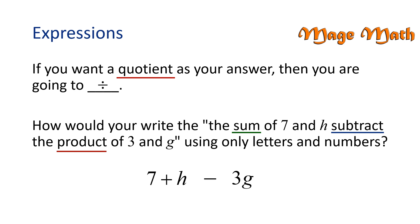So we started with the quantity of 7 plus h, and then we subtracted 3g, or the product of 3g. Good job!